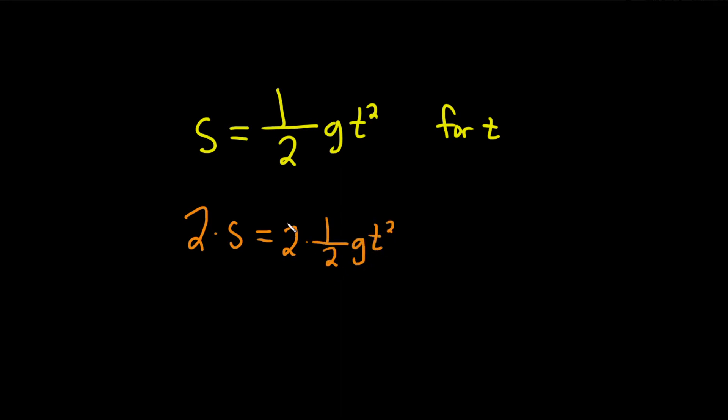Okay, so these cancel. So we're left with 2s equals gt squared. Again, we're looking for little t. So we'll start by trying to isolate this t squared. So let's just divide by the g. So divide by the g. Then these cancel. So we end up with 2s over g, and that's equal to t squared.